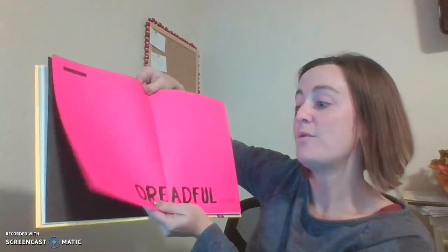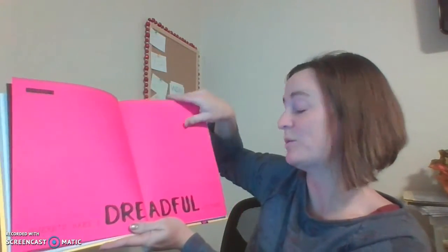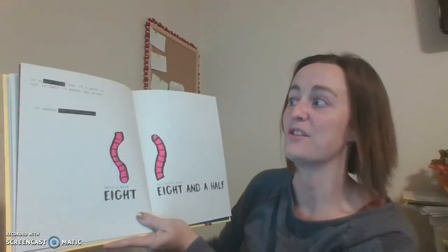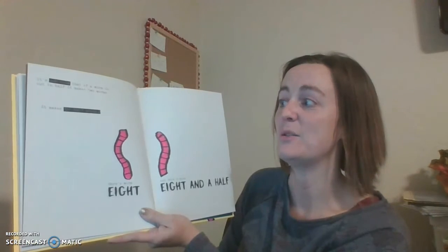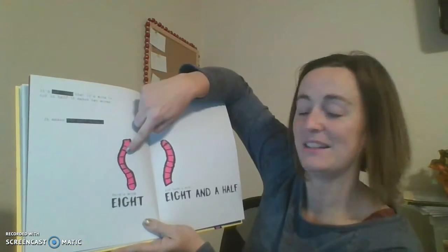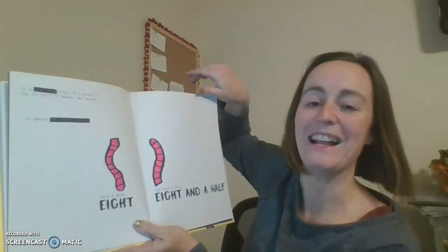One, two, three, four, five, six, seven. Oh dear! There's been a dreadful accident. It's not true that if a worm is cut in half it makes two worms. It makes two half worms. Here's worm eight and here's worm eight and a half.